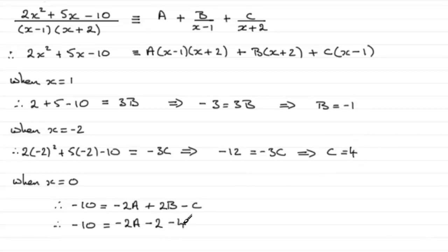So minus 2 and minus 4 is minus 6. Add that to both sides, and you get 6 minus 10, which means we've got minus 4 equals minus 2a. And if we divide both sides by minus 2, then a turns out to be 2.